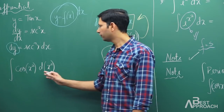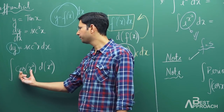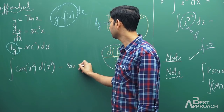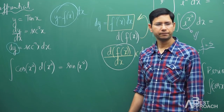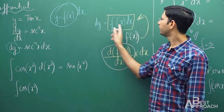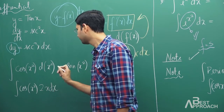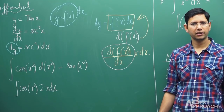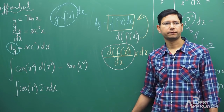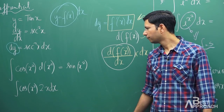For example, sin(x²): who can differentiate with respect to x²? If we differentiate sin(x²) with respect to x², we get cos(x²). Now, d(x²) can be written as 2x dx. So we can write cos(x²) · d(x²) = cos(x²) · 2x dx.